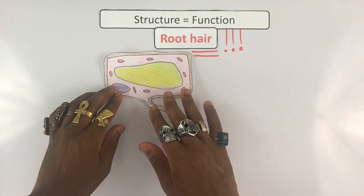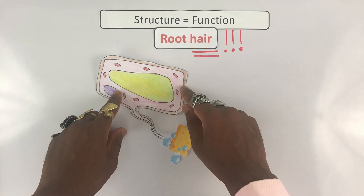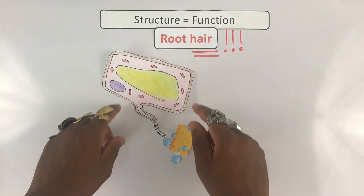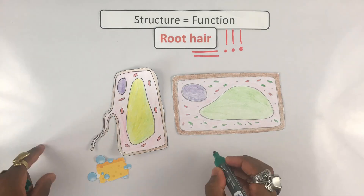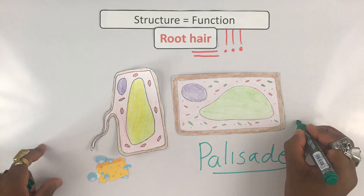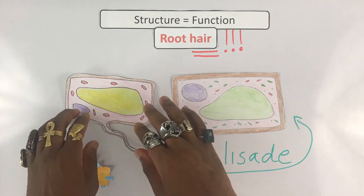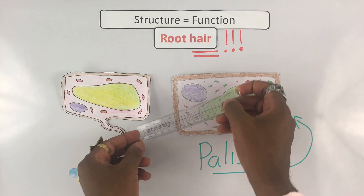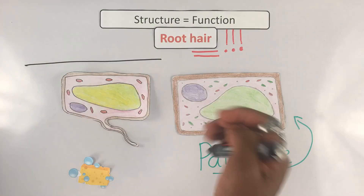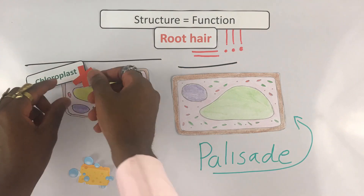Just like with the animal cells, the structure is related to the function, and root hair cells are adapted to absorb things. Notice how it looks slightly different from a regular plant cell, sometimes called a palisade cell — more on that in a future video. One difference is the large surface area to absorb water and minerals. Another difference is that you don't have chloroplasts.